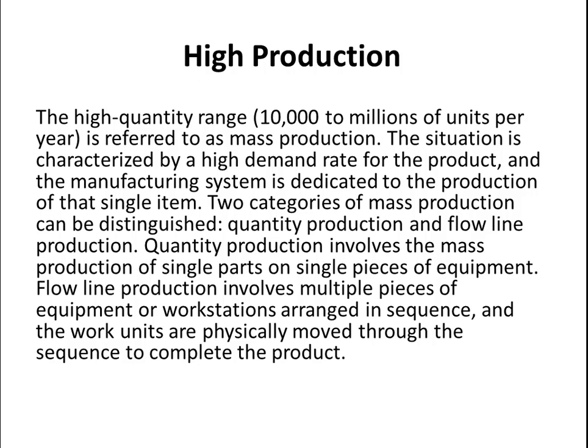In quantity production, one product is produced several times one by one. In flow line production, several types of products are produced. And that covers all the key points about production types.